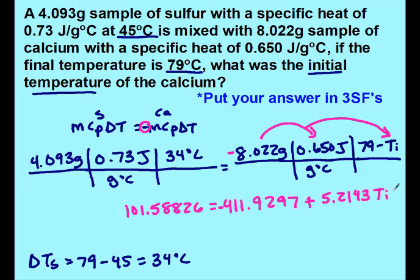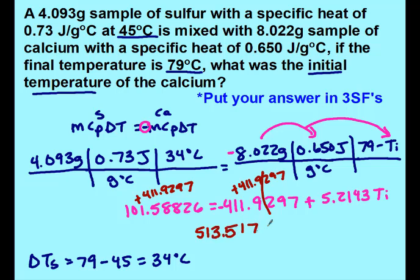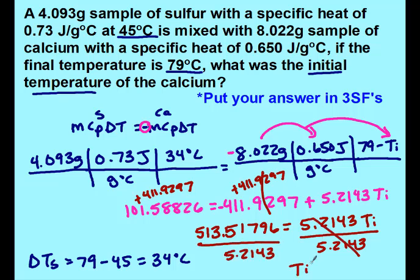Don't forget to bring down your Ti. Combining like terms by adding 411.9297 to both sides: those cancel and I add up 101.7297 plus 411.9297 on one side. I get 513.518 equals 5.2143·Ti. Dividing to isolate Ti, the initial temperature was 98.5 degrees Celsius. This makes sense — calcium started at about 98.5, sulfur started at 45, and they met at 79, which is between those two.